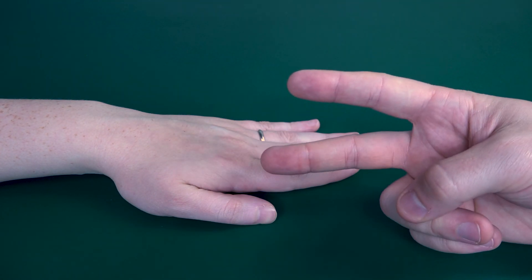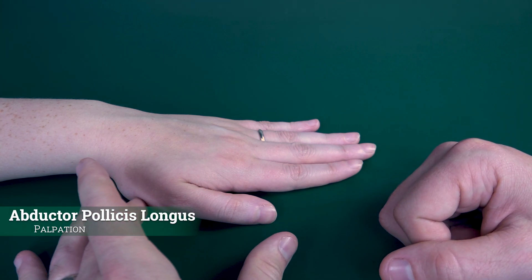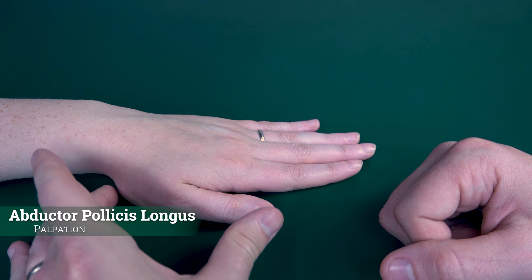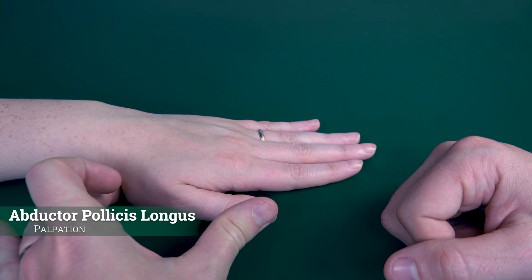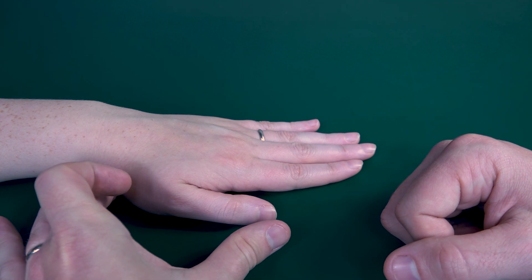If they cannot do this, then I would palpate the abductor pollicis longus. It's found back here. I'll be palpating this tendon to feel if it's sliding or attempting to slide.